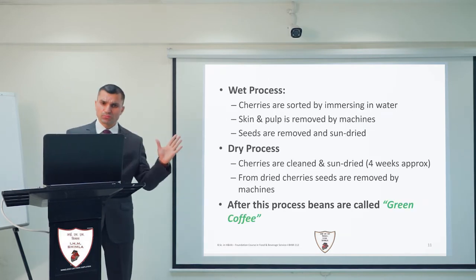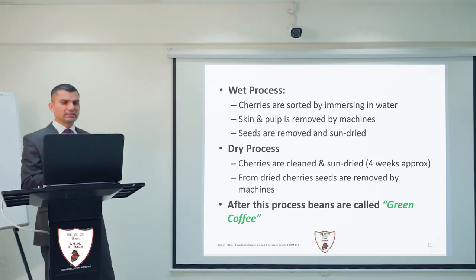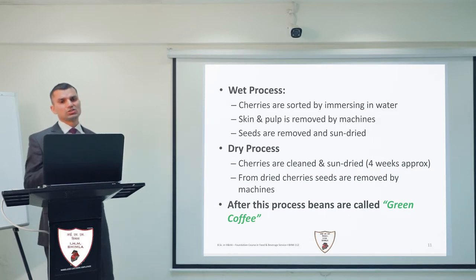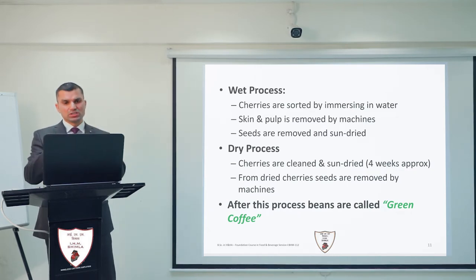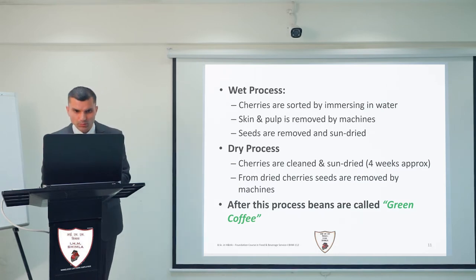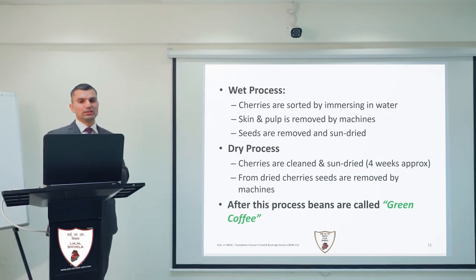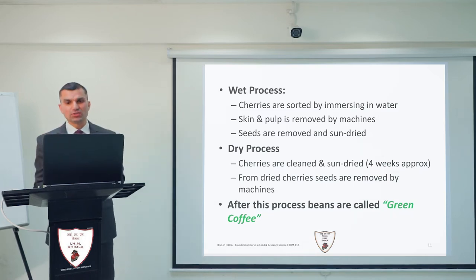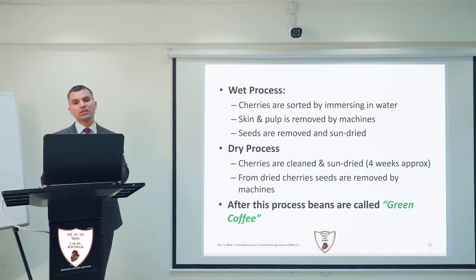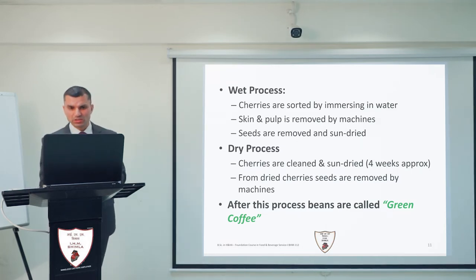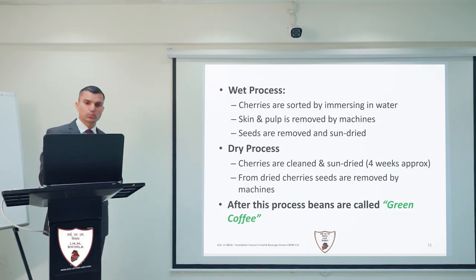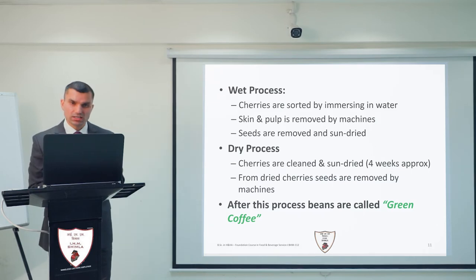In order to process the beans, there are two different methods: the wet process and the dry process. In the wet process, the cherries are immersed in water and then sorted. Cherries that float to the top are discarded, and those that sink to the bottom are processed. The skin and pulp are removed by machines, and the seeds are sun-dried. In the dry process, the cherries are sun-dried directly for approximately four weeks, and then their seeds are removed by machines. The bean obtained is known as green coffee.